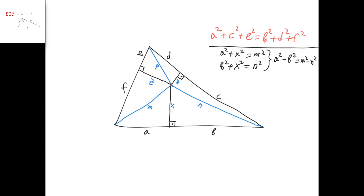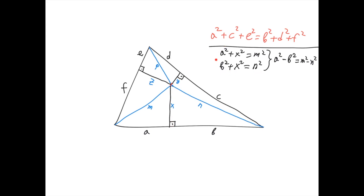Let's apply it just for this triangle and this triangle. We have that a² + x² = m², and in this triangle b² + x² = n². Now we subtract these two equations — x² cancels out — and we get a² − b² = m² − n².